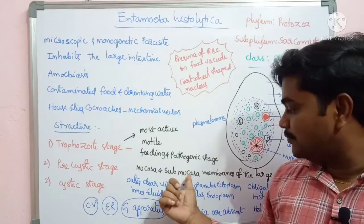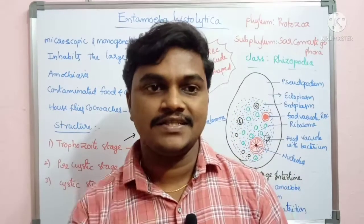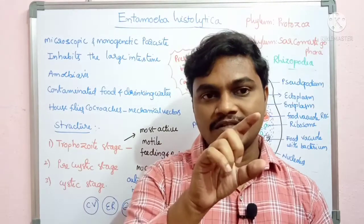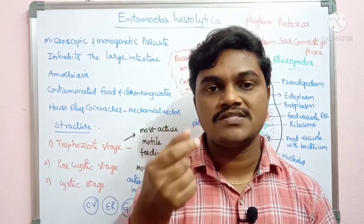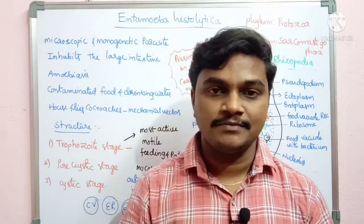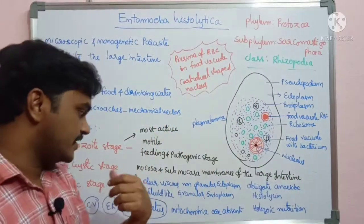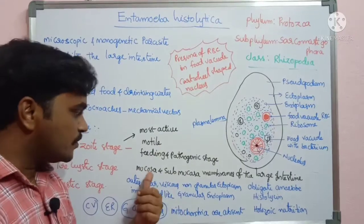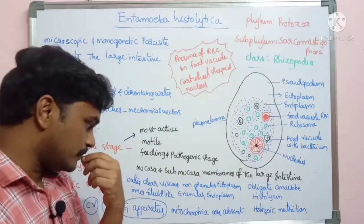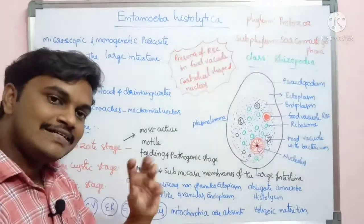The trophozoite resides in the mucosa and sub-mucosa layers of the large intestine. It is called a histozoic parasite because it lives within the tissue layers — specifically the mucosa and sub-mucosa layers of the large intestine. The ectoplasm and endoplasm are its characteristic cytoplasmic features.